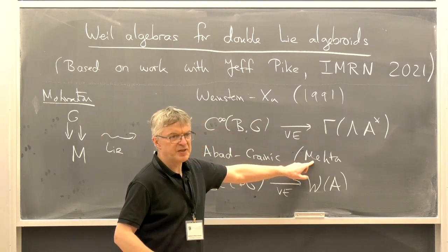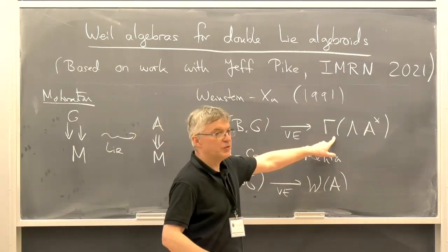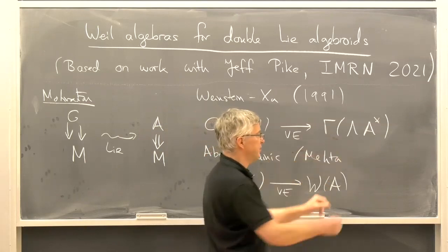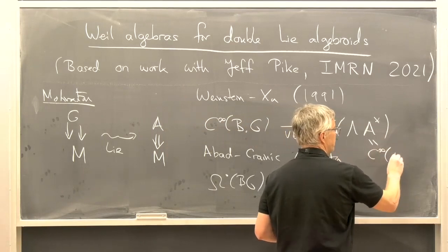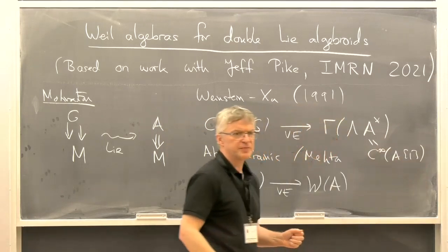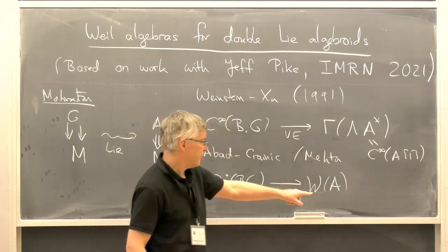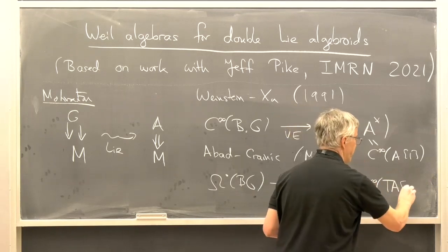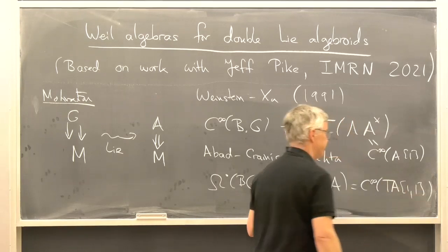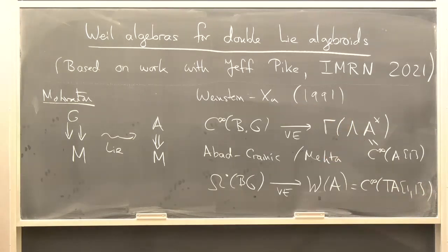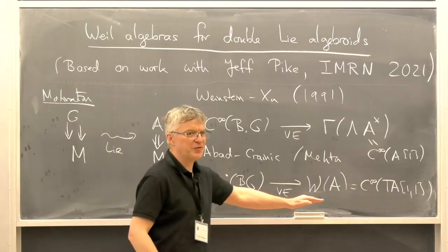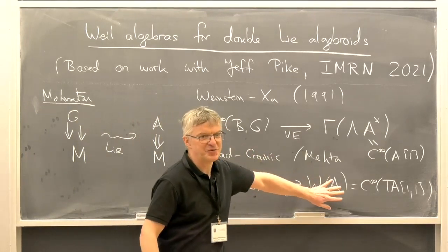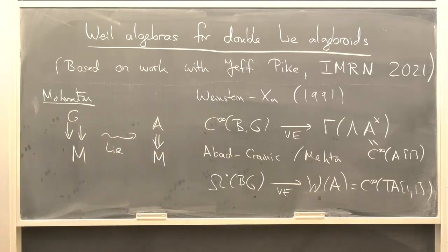In Mehta's paper, the definition is quite simple. There's the super-geometry interpretation of the Weil complex as smooth functions on A[1], with a degree shift. And according to Mehta, this is just C-infinity of the tangent bundle where you shift both vector bundle directions by one. That's a super-geometric description, but if you're more classically inclined you want the classical description. We weren't satisfied with the Abad-Crainic description of the Weil algebra — and so this is where double Lie algebroids come in.